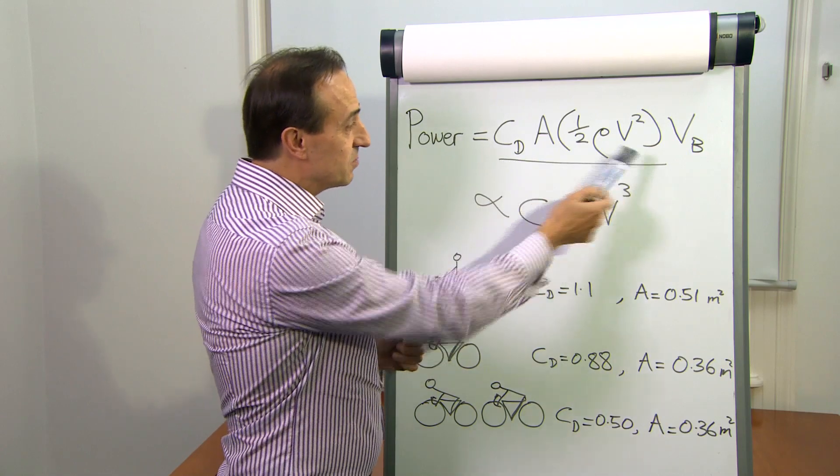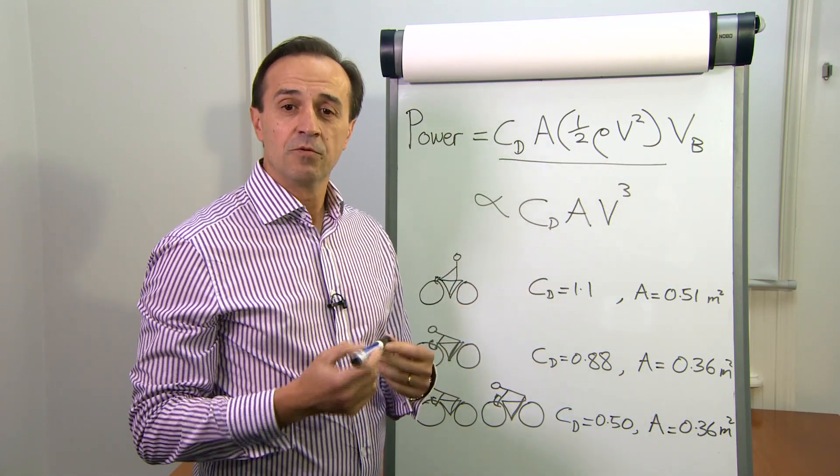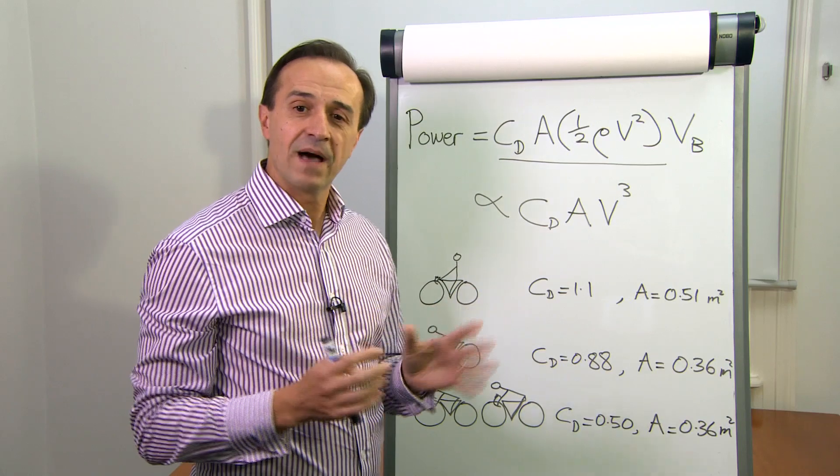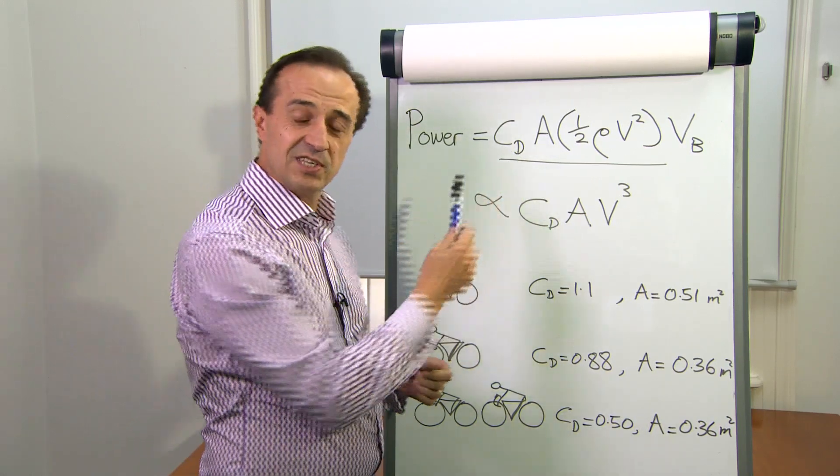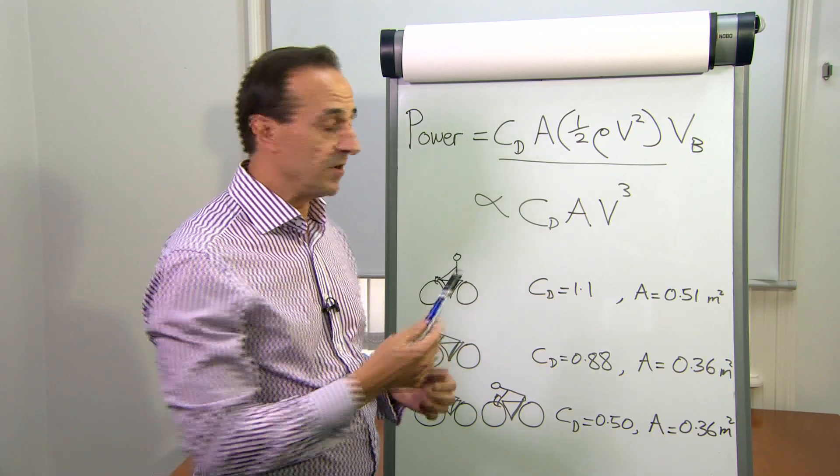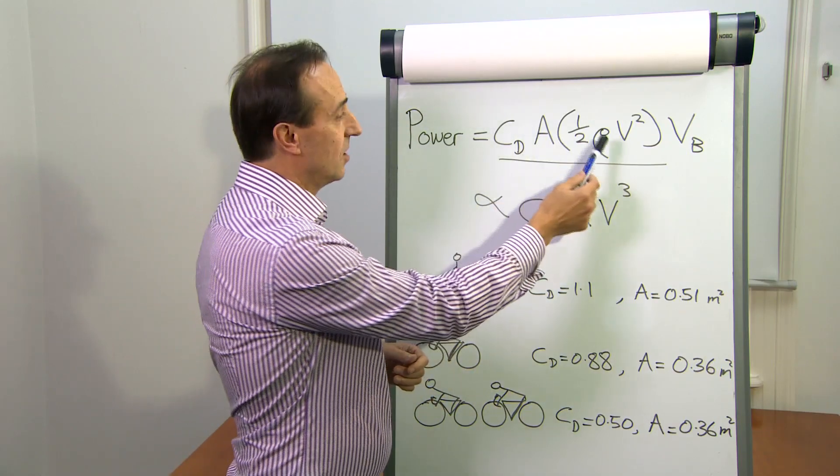It relates to the drag force. This is a complex thing which relies on understanding the imbalance of stresses around the rider and the cycle. We quantify that with CD, which we usually get from experiment, times the cross-sectional area times the dynamic pressure.